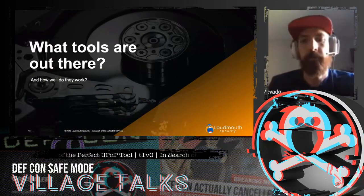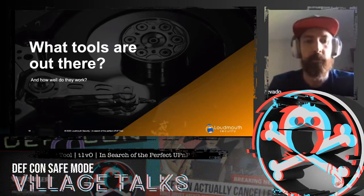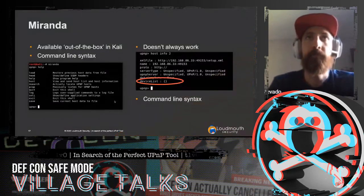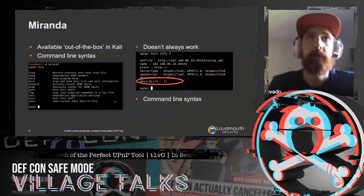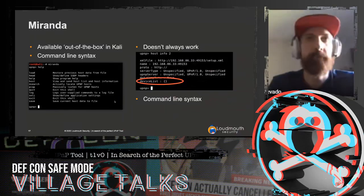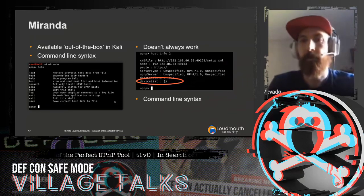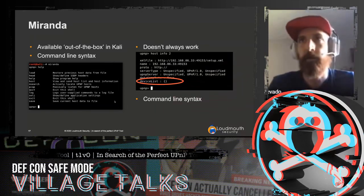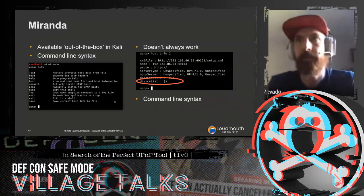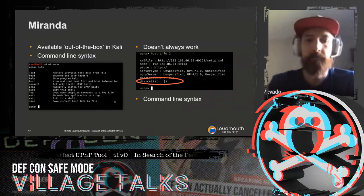Let's look at some of the tools that are out there. The first is Miranda, which is available in Kali out of the box and has a nice command line syntax. On the con side, I found it doesn't always work — I ran it yesterday on my home network and it can find devices by doing an mSearch, but it has trouble parsing some service description files, coming back with an empty list of services. Also, command line syntax isn't as nice for interacting with these requests.